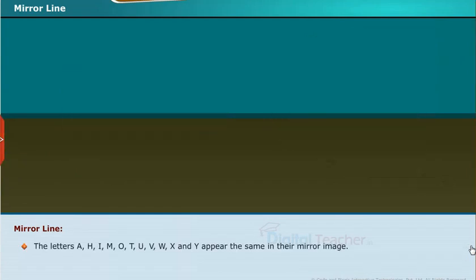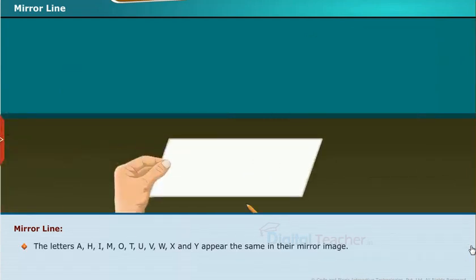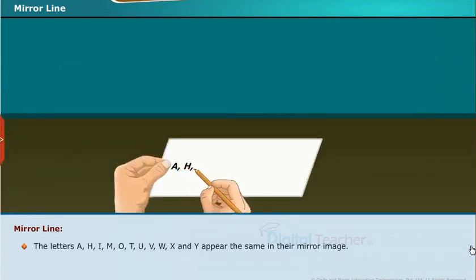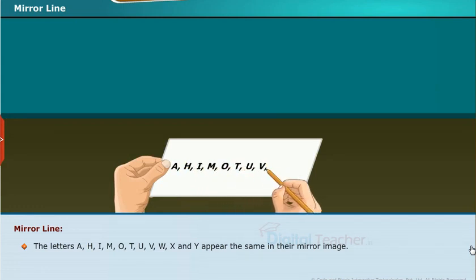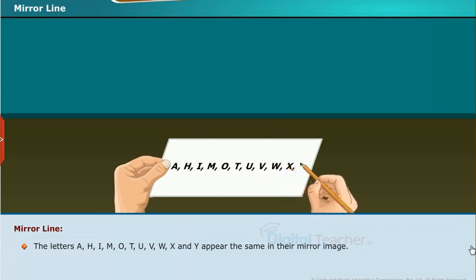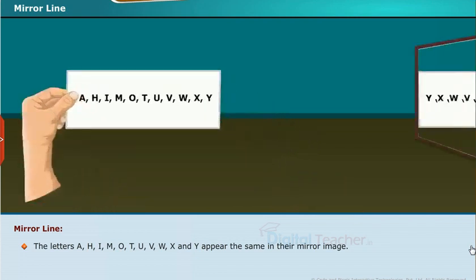Letters written from left to right appear written from right to left in the mirror image. The letters A, H, I, M, O, T, U, V, W, X, and Y appear the same in their mirror image.